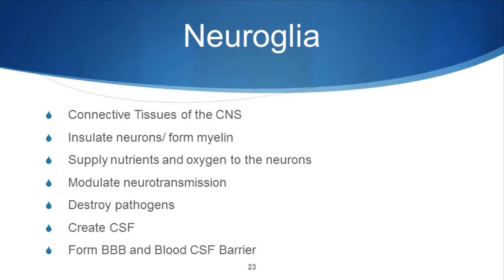Let's talk about neuroglia and give an overview of what this is. Neuroglia are the connective tissue of the central nervous system — the structure on which everything is built. They insulate neurons by creating myelin, a sheath surrounding the nerves. They supply nutrients and oxygen to the neurons. They modulate neurotransmission. They destroy pathogens in the central nervous system. They create the cerebrospinal fluid and form the blood-brain barrier and the cerebrospinal fluid barrier.